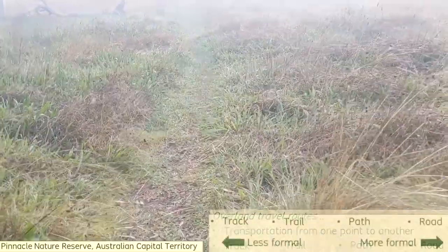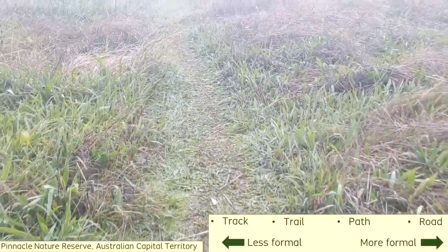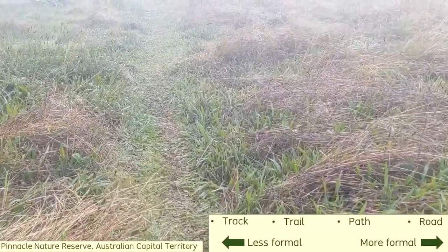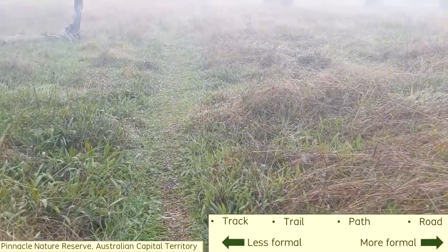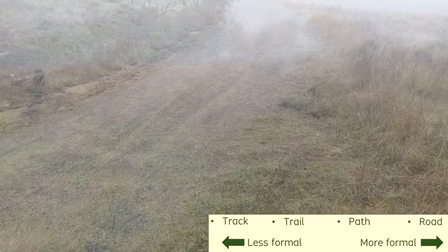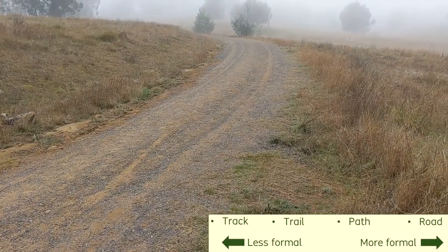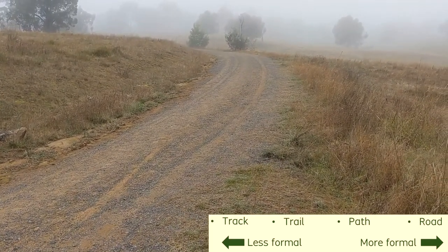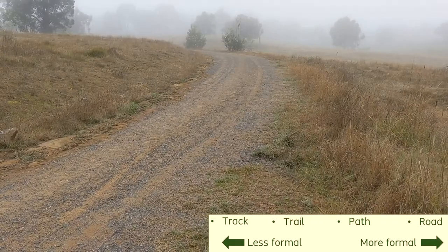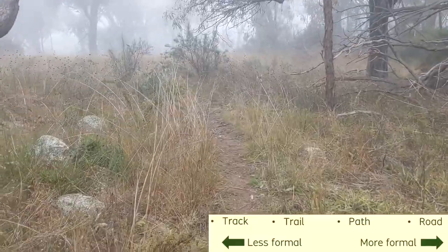I should acknowledge that people use different definitions about these categories of overland transportation routes. Generally, tracks refer to small and informal traces of where a person or an animal has moved over the ground. Roads refer to more formalized routes that can accommodate a heavy load of traffic. Between those two ends of a spectrum, you could propose various definitions of trails, paths, or other categories.